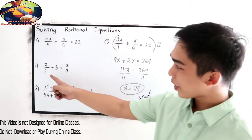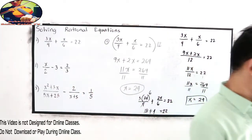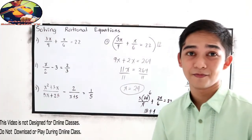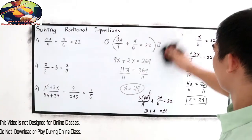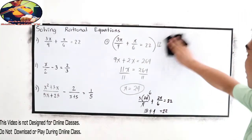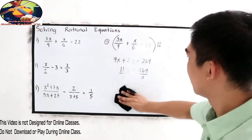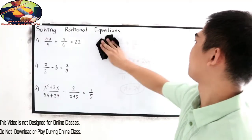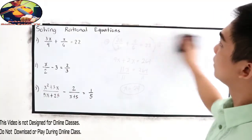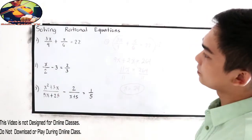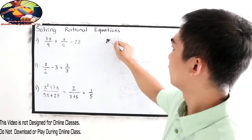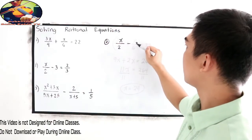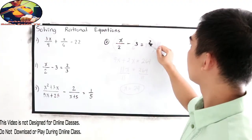Now I want you to try number 2. You can pause the video if you want, then after answering, resume watching to check your work. Our problem is: x over 2 minus 3 is equal to 2 over 3.